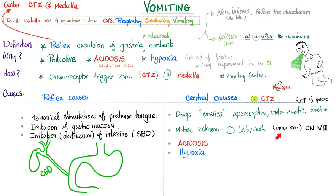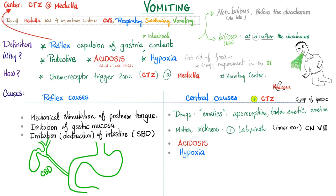Motion sickness causes nausea and vomiting. This involves the labyrinth or your inner ear, cranial nerve 8 — also known as the auditory nerve, also known as the vestibulocochlear nerve, also known as the statoacoustic nerve. Also acidosis and hypoxia, as we've discussed before. Vomiting is a reflex.